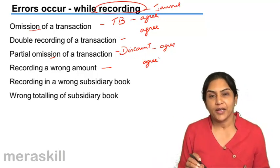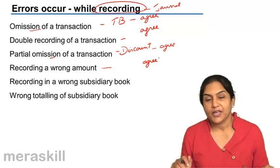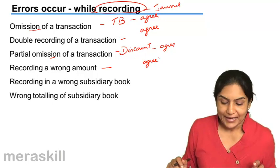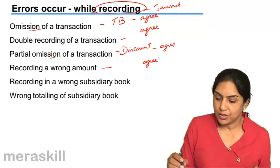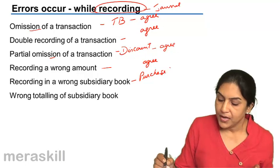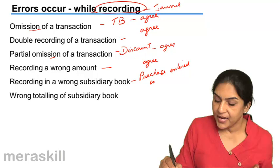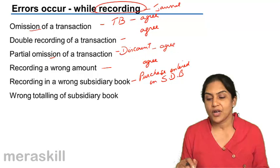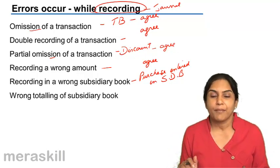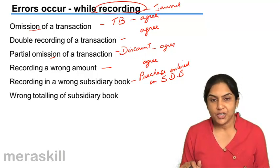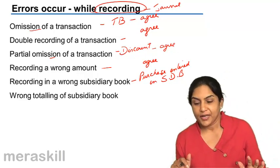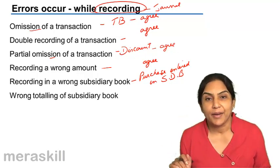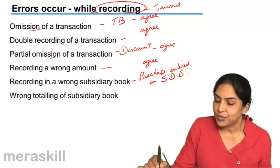We may also record a transaction in the wrong subsidiary book — for example, a purchase is entered in the sales day book. Then the purchase account is wrong, the sales account is wrong, and the person's account is also wrong. However, the trial balance will still tally, because the entry has gone into sales day book, creating an additional debit to that person's account, so both sides remain equal.